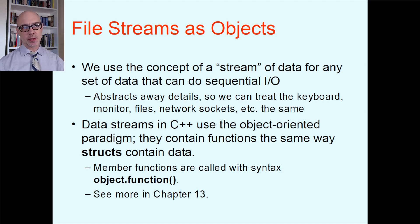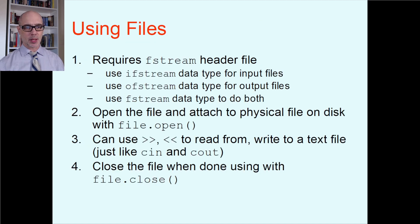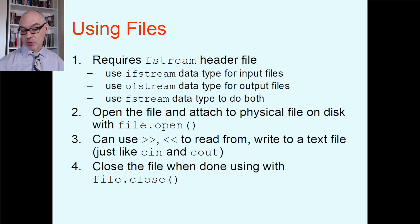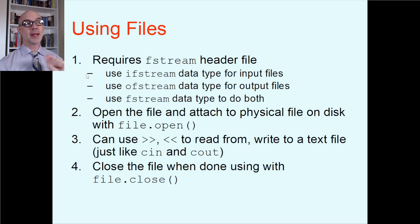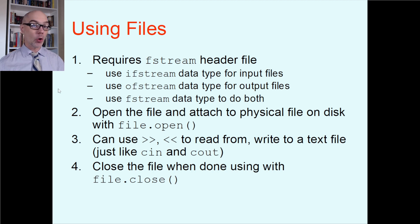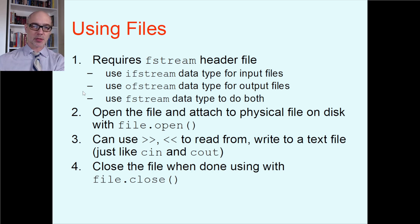When you're using files, there are four steps. Item number one: declare an object, which is a lot like declaring a struct or a variable. There are three different types of objects for file handling, and they all exist in the fstream header file, so you'll need to include fstream. The three options are: ifstream for an input file stream — only for information coming from the hard drive into your program; ofstream for output file stream — for information going from your program to a file; and fstream, which can do both.